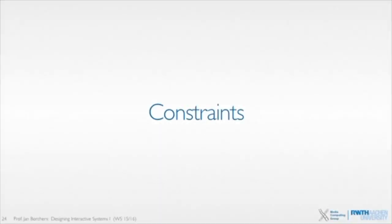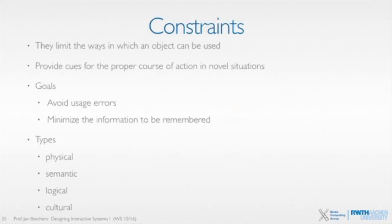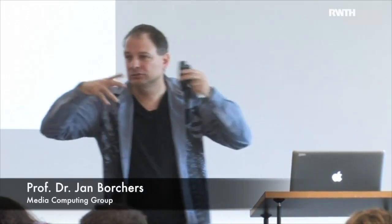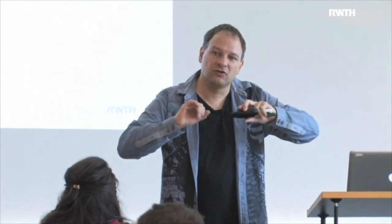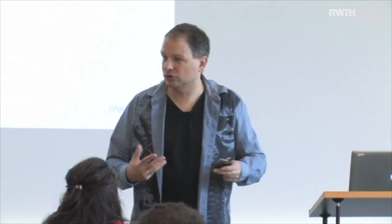You guys have already talked about affordances, right? Constraints are sort of the twin evil brother of affordances, because they allow us to limit what people can do. They provide cues on how to pick the right action in a particular situation because certain things are being kept away from you — you can't do them. While an affordance says 'use this object in the following way,' a constraint will make you avoid certain ways of using an object that the designer doesn't want you to use.